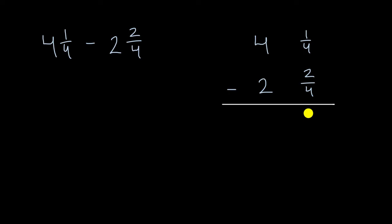Well, what comes to the rescue is a notion called regrouping. And that's that we're not just subtracting two-fourths from one-fourth, we're subtracting two and two-fourths from four and one-fourth. So what we could do is we could take some of the value that's in this four and regroup it into the fraction. What do I mean by that?